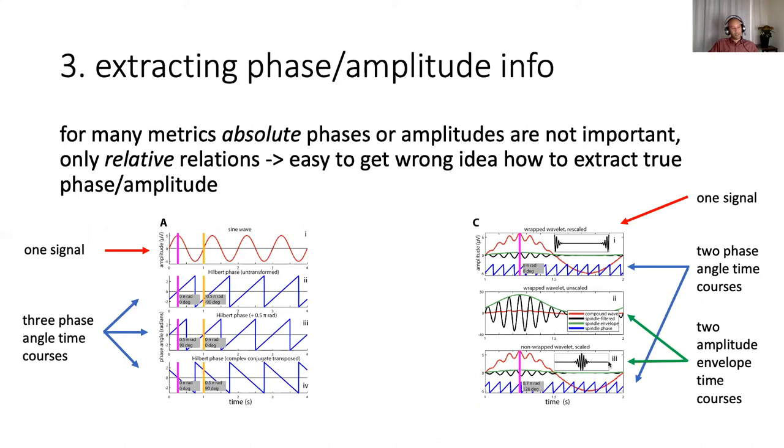And if you use the Hilbert transform to try to get your phases, depending on how you do it, you might get three different time courses of phase angles. And it's important to know which one you're actually building. Another example is if you're using wavelets to extract phase or amplitude information. The typical way that a wavelet is presented is like this with its energy containing bit right at the center. If you use that, you're getting wrong phase estimates. What you want is you want to have the bits of your wavelet that contain the highest energy right at the beginning and the end of your signal. Similarly, if you don't rescale your wavelets in the frequency domain, the amplitudes that are returned aren't the absolute amplitudes of the spectral entities you were looking for.